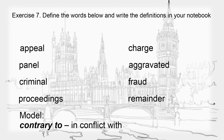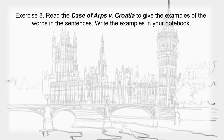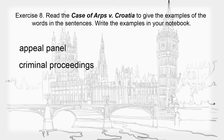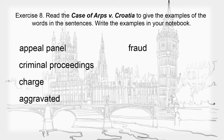Here's a model for you: Contrary to — in conflict with. Read the case of Arps vs. Croatia to give examples of the words in sentences. Write the examples in your notebook: Appeal, Panel, Criminal proceedings, Charge, Aggravated, Fraud, Contrary to, Remainder.